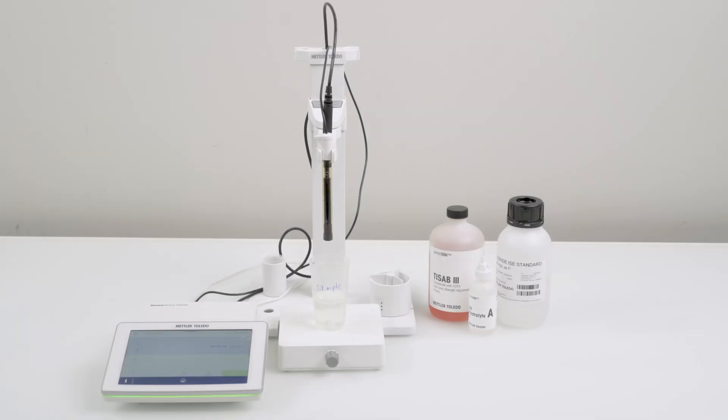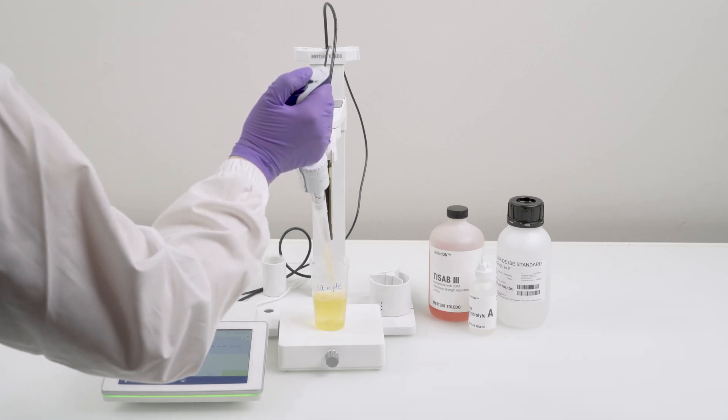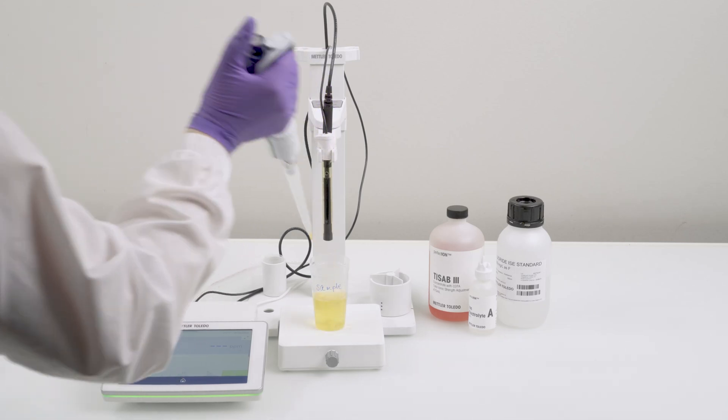Firstly, make sure that your electrode has been conditioned and calibrated before use. Now add the appropriate ionic strength adjuster solution to the sample to achieve constant ionic strength.